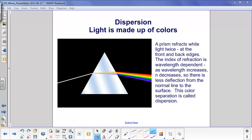Dispersion, or light is made up of colors. Here we have a prism, glass or plastic prism, and we have an incident light beam which is white.